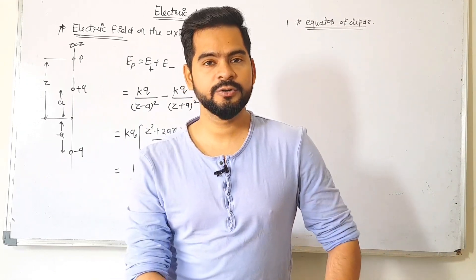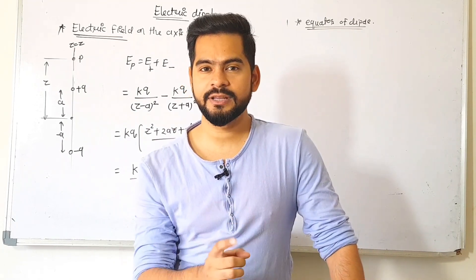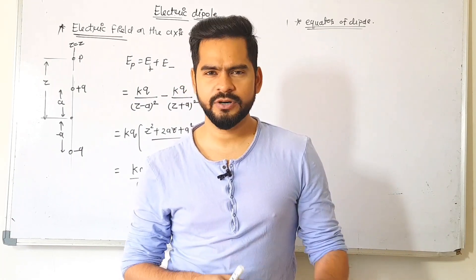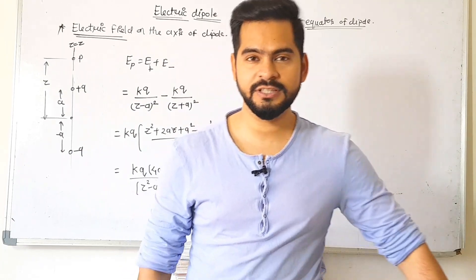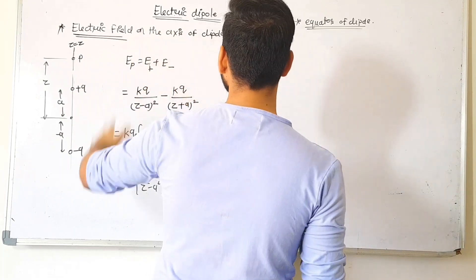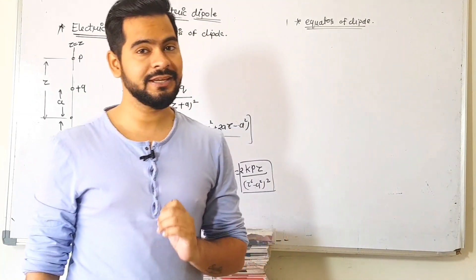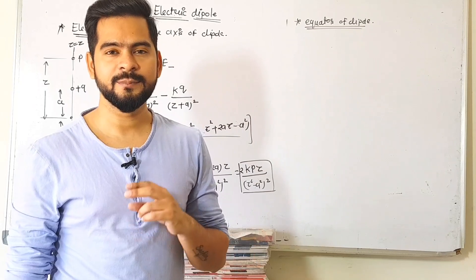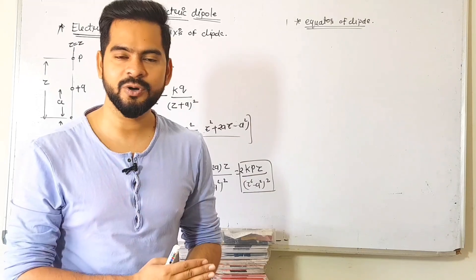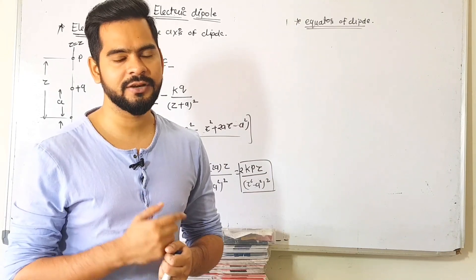Now we are going to discuss the electric field on the axis of the dipole, and then we will find the field along the perpendicular direction — the equatorial axis. This is an important derivation; if you know it, it can fetch 2–3 marks as a derivation question. For the electric field on the axis of the dipole, we first consider the dipole placed on the z-axis.